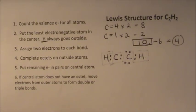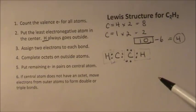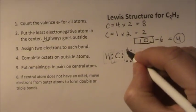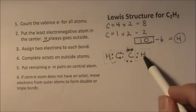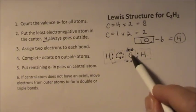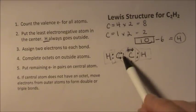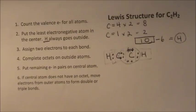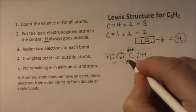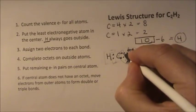If the central atom doesn't have an octet, what we need to do is pull some electrons in to share them and to make each atom have more electrons. So let's take these two right here and we'll put them right here. So now hydrogens are fine. This carbon has two, four, six, eight because it's sharing, right? And this carbon has two, four, six.